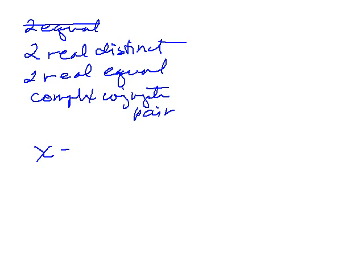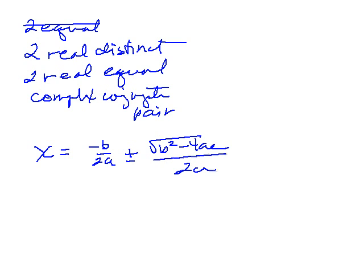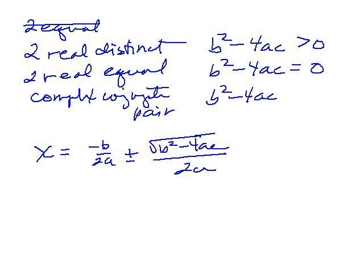From the quadratic formula, x = -b over 2a plus or minus square root of b² - 4ac over 2a, these three root types can be sorted out by looking at b² - 4ac, the discriminant. If that's greater than zero, you get two real distinct roots. If b² - 4ac equals zero, the roots are equal. If b² - 4ac is less than zero, the roots are complex.